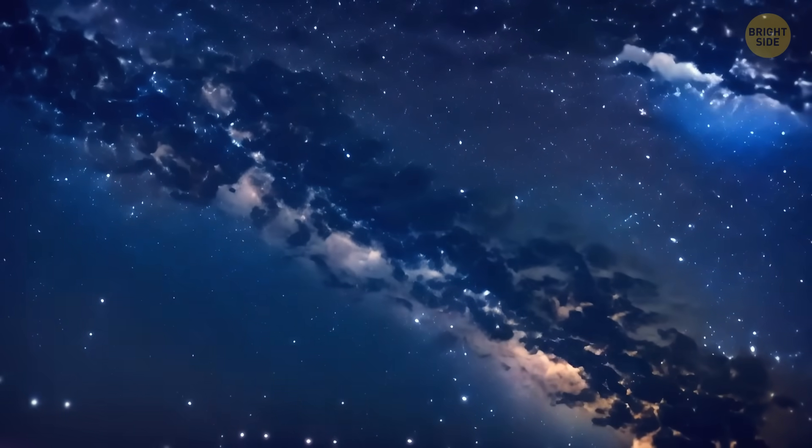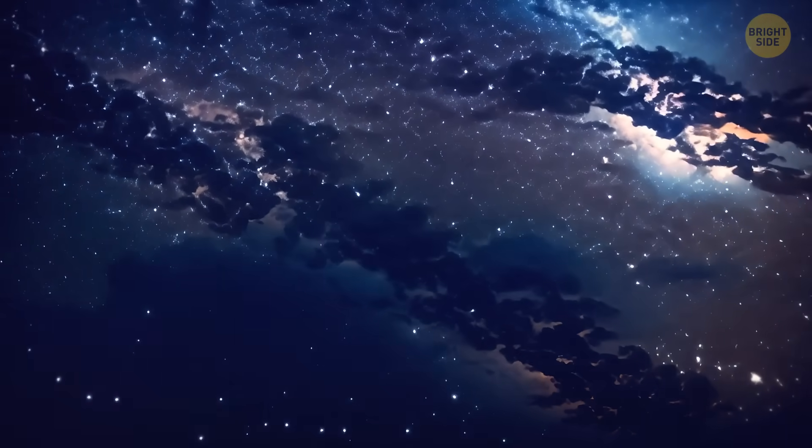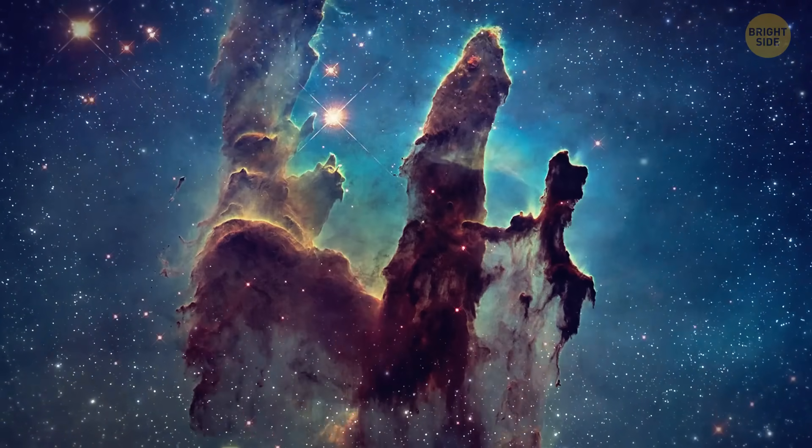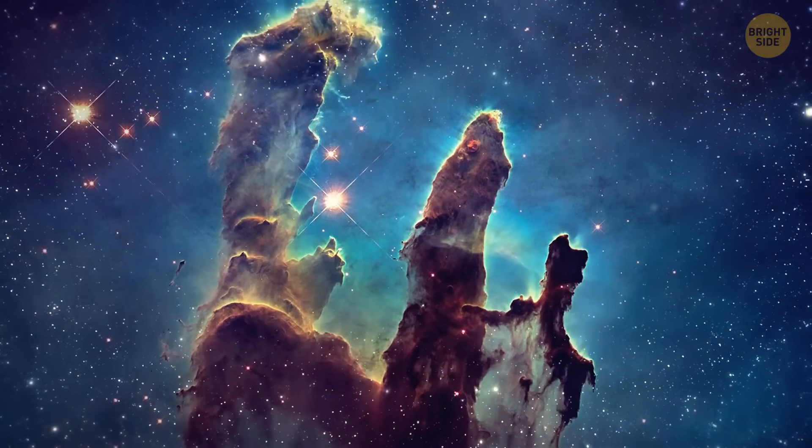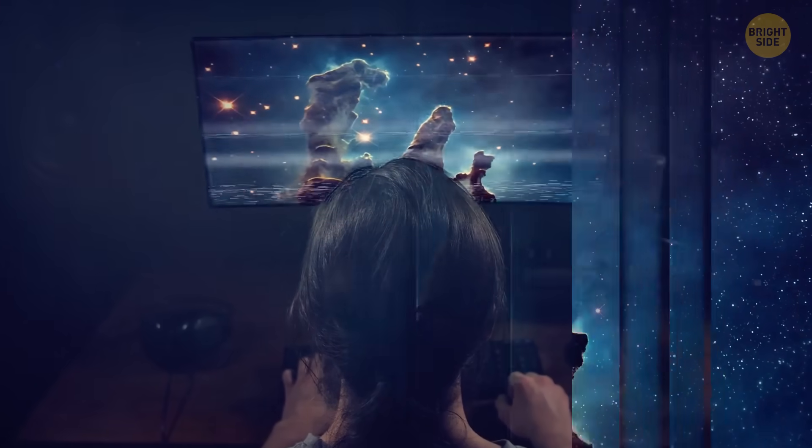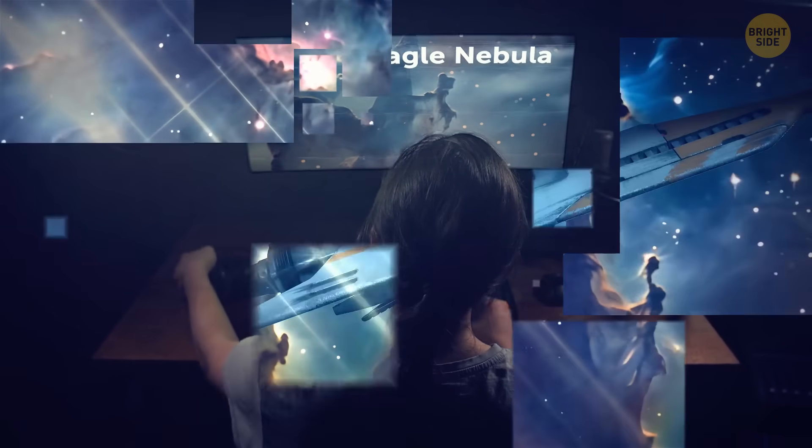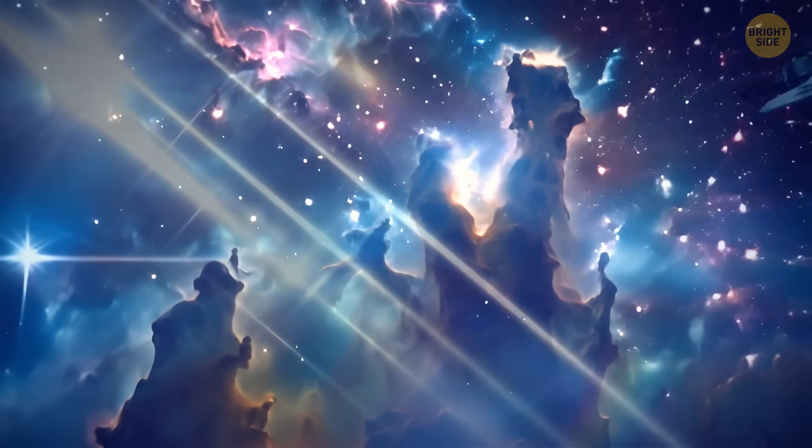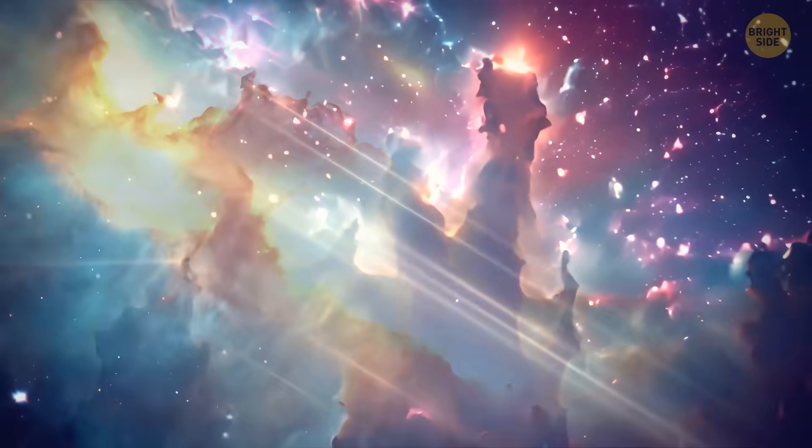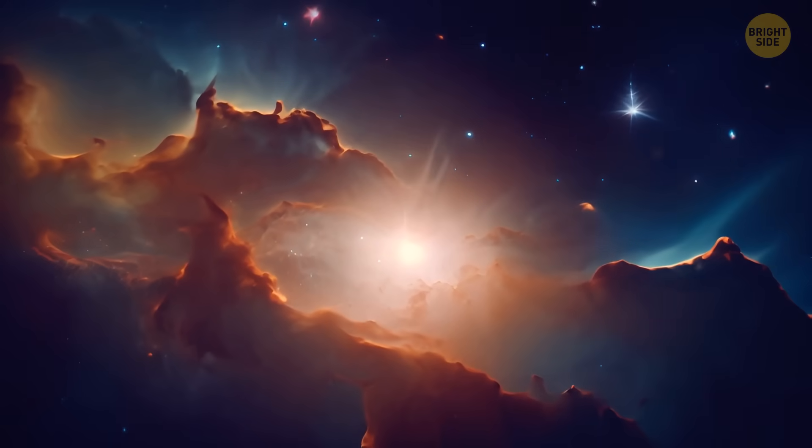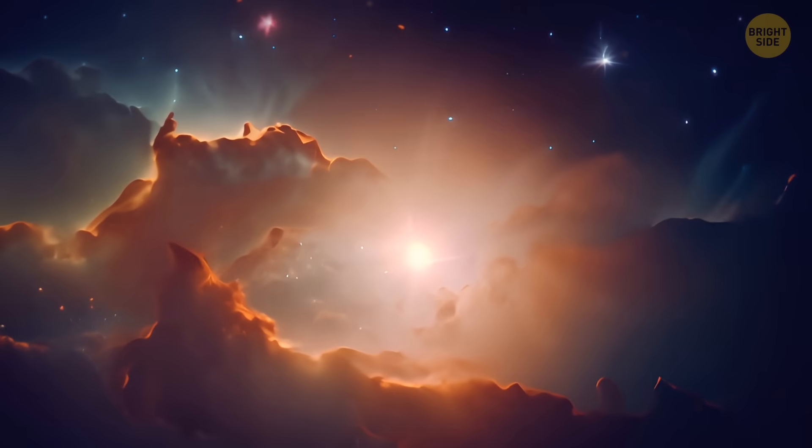Ready for our next stop on our ride through the Milky Way? Check out these huge, twisted clouds of interstellar dust and gas hanging out in the center of M16, also known as the Eagle Nebula. We've got ourselves the super cool Pillars of Creation, which are like towering columns where brand new stars like to hide and chill.